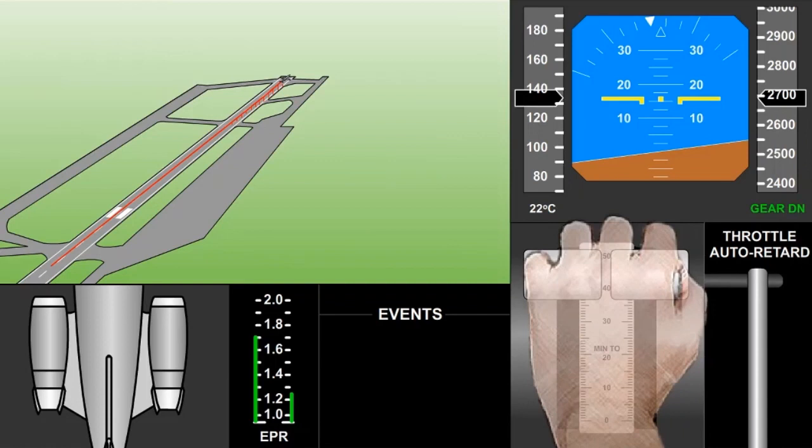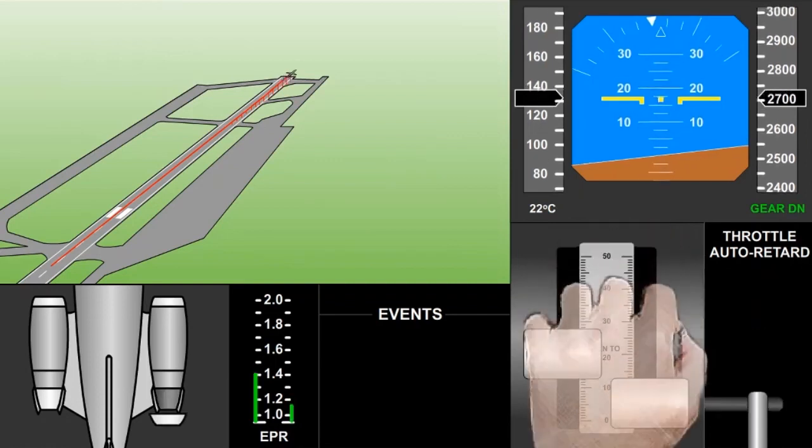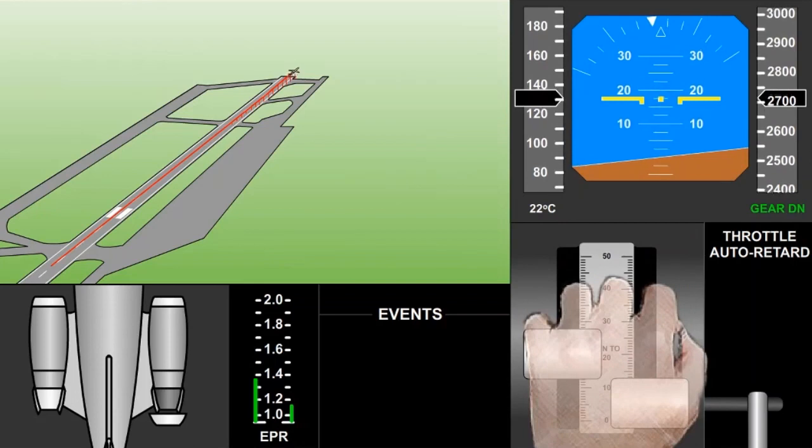He moved the thrust lever forward, but it snapped back a second time. As he held both levers in the forward position, the automatic retard of the right lever also caused him to retard the left lever. He was able to push them both up.